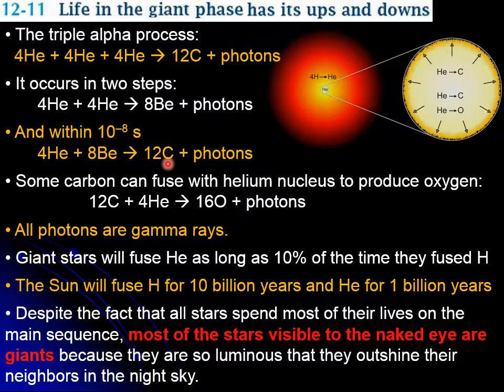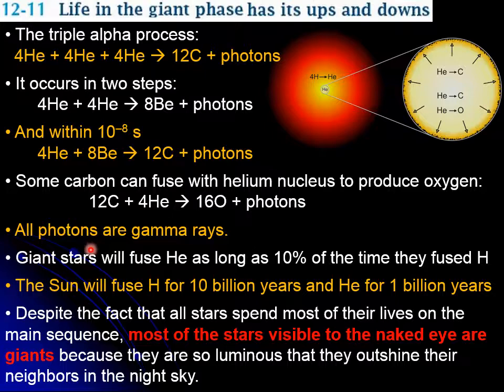For most cases, carbon formation will be the predominant reaction, though oxygen will eventually be formed as well — it just requires a bit more time and higher temperature. The photons that come out are gamma rays, which is the usual type of radiation produced in nuclear reactions.